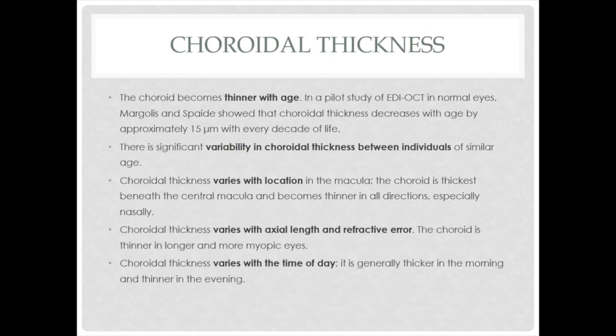Choroidal thickness varies with age, location, axial length, and time of day. The choroid becomes thinner with age. In a pilot study of EDI-OCT in normal eyes, Margolis and Spade showed choroidal thickness decreases by approximately 15 micrometres per decade. It varies with location — thickest at the central macula and thinnest nasally. It is thinner in longer, more myopic eyes, and also varies with time of day — thicker in the morning and thinner in the evening.